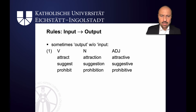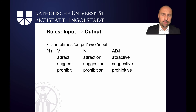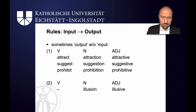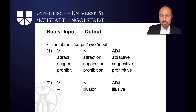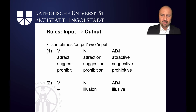The verbs attract, suggest, and prohibit have corresponding nouns — attraction, suggestion, prohibition — as well as corresponding adjectives: attractive, suggestive, prohibitive. But what about illusion and elusive? In the input-output model, attraction should be created by attract plus -tion, suggestion by suggest plus -tion, prohibition by prohibit plus -tion. But illusion hasn't got an input — there is no 'illus.' So in our mental grammar we have words for illusion and elusive, and we can see they are linked in exactly the same way as attraction/attractive and suggestion/suggestive are. But since there is no input, rule-based approaches cannot explain this.